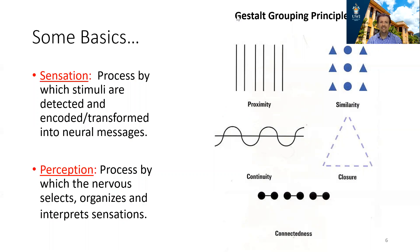We can say that sensation is the process by which stimuli are detected and converted into neural information. But perception is the process by which the nervous system selects, organizes, and interprets these sensations. Sensations are physical, chemical, and electrical signals; perception is how those electrical changes are interpreted by the brain to make sense of reality. Many psychologists and neuroscientists have studied how the brain interprets reality, and one of the most famous was Gestalt, who came up with certain principles.